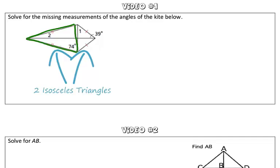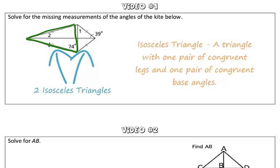So here we have our first isosceles triangle. And again, an isosceles triangle is a triangle that has one pair of congruent lengths, and the base angles are also congruent.